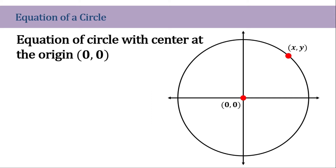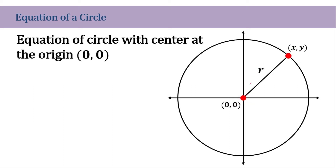Now we need to write the equation of a circle, and we need to know the radius. So given a point one and a point two, to get the radius we need to find the distance between these two points — simply put, we use the distance formula. Or we could just use the Pythagorean theorem to find the measurement of the radius. These two processes are the same because the distance formula was derived from the Pythagorean formula.